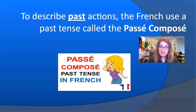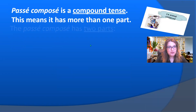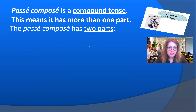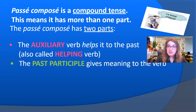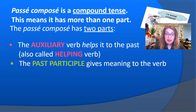To describe past actions, the French use a past tense called le passé composé. The passé composé is a compound tense — this means it has more than one part. It is composed of two parts: the first part is called l'auxiliaire, or the auxiliary or helping verb. The past participle is the second part and it gives meaning to the verb. We have l'auxiliaire et le participe passé.